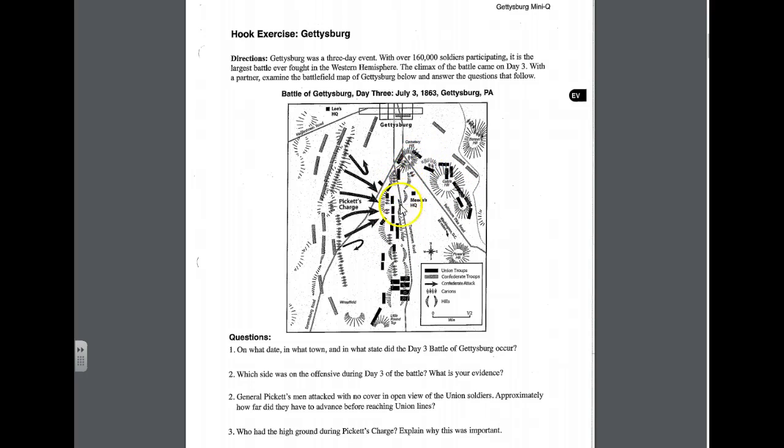This, by the way, is called Cemetery Ridge on the battlefield at Gettysburg. If you look over to the west, the gray rectangular lines on your map are going to be the Confederate troop locations on day three of the battle.